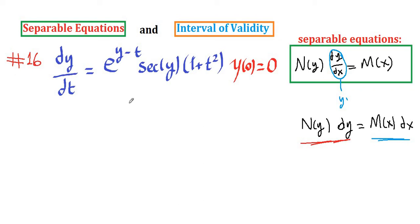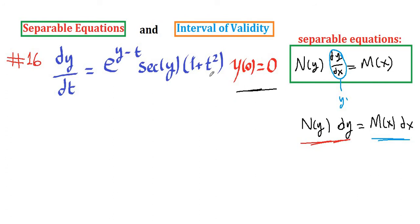Example 16. This is the last example of this series. We have dy/dt equals e to the y minus t times secant y times (1 plus t squared), with initial condition y(0) equal to 0.